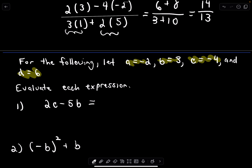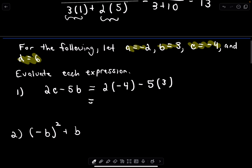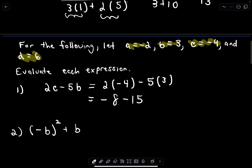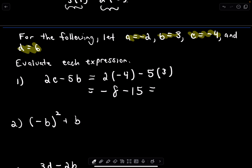So 2 times c: c is negative 4, then minus 5, and b was equal to 3, so I'll substitute in 3. 2 times negative 4 is negative 8, and negative 5 times positive 3 is negative 15. Negative 8 minus 15 — since they're the same sign, I add their absolute values: 8 plus 15 is 23, but they're both negative, so the answer is negative 23.